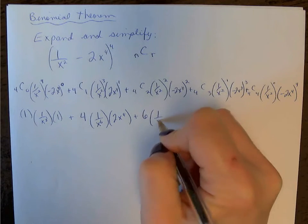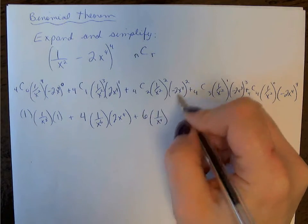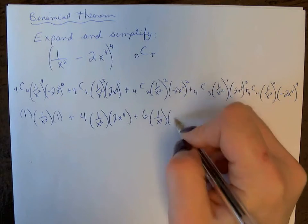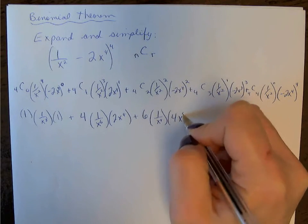1 squared is 1/x to the 4. Squaring this, -2 squared becomes positive 4, x to the 8,